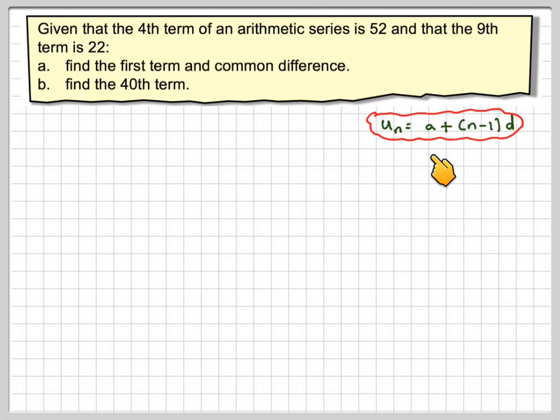Now, using un = a + (n-1)d, we've got n = 4. The 4th term is 52, and when n = 9, the 9th term is 22.